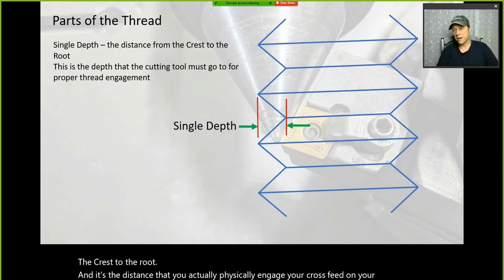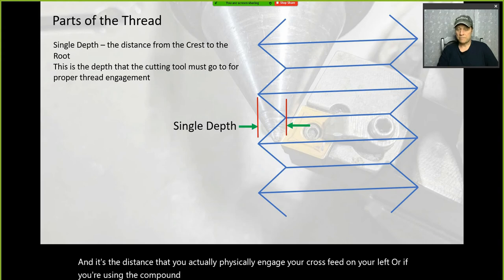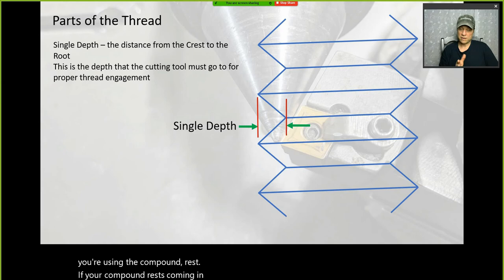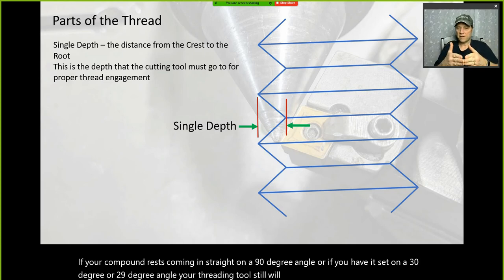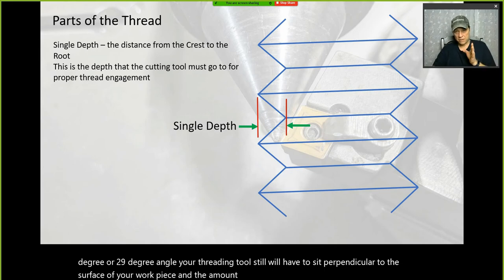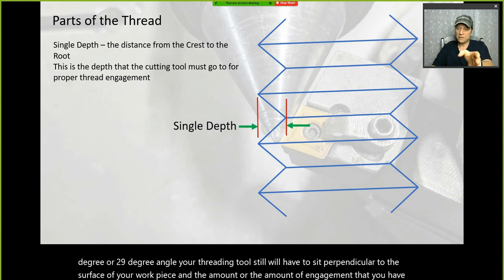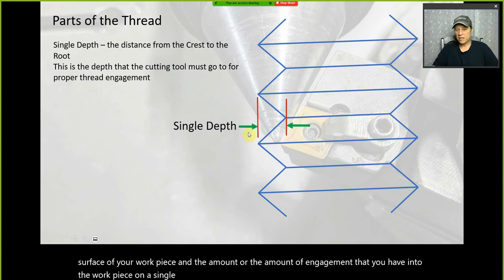Whether you're using the compound rest coming in straight at 90 degrees or set at 30 or 29 degrees, your threading tool still has to sit perpendicular to the surface of your workpiece. The amount of engagement into the workpiece on a single side is your single depth — it's a linear movement.